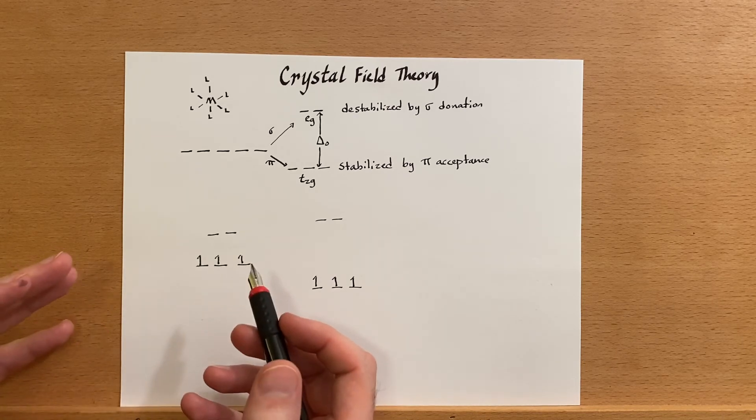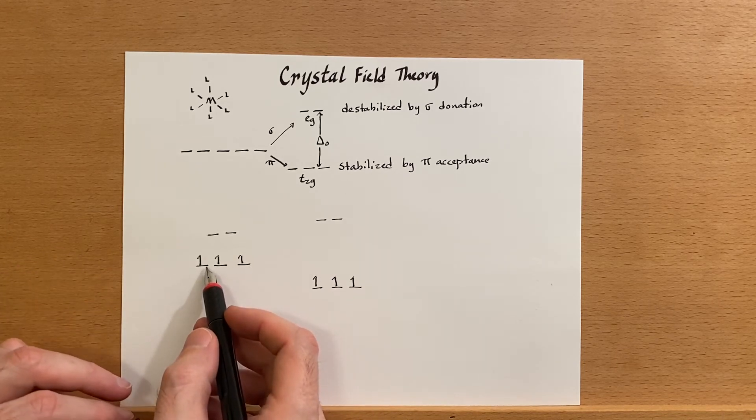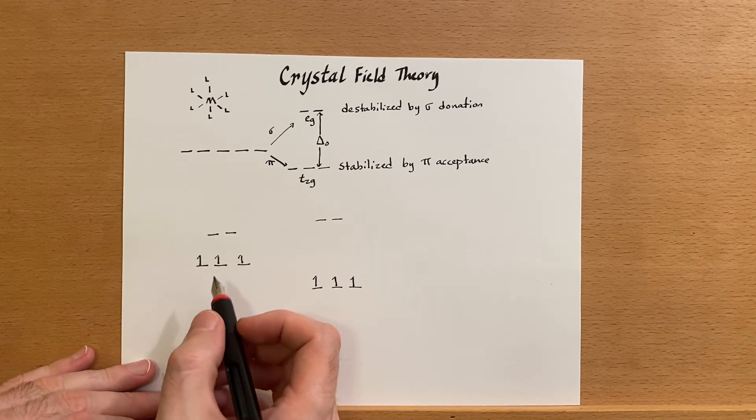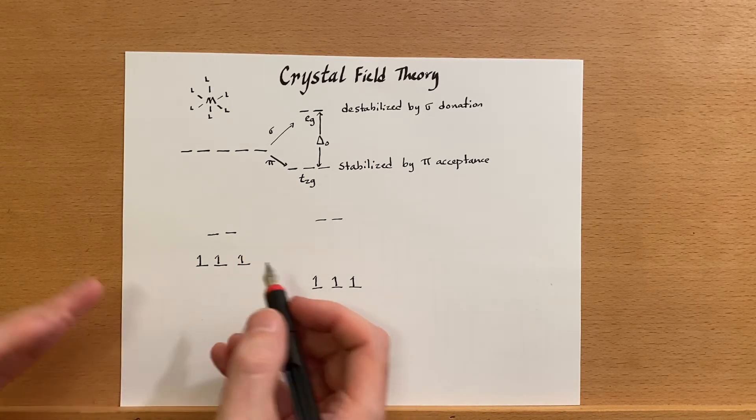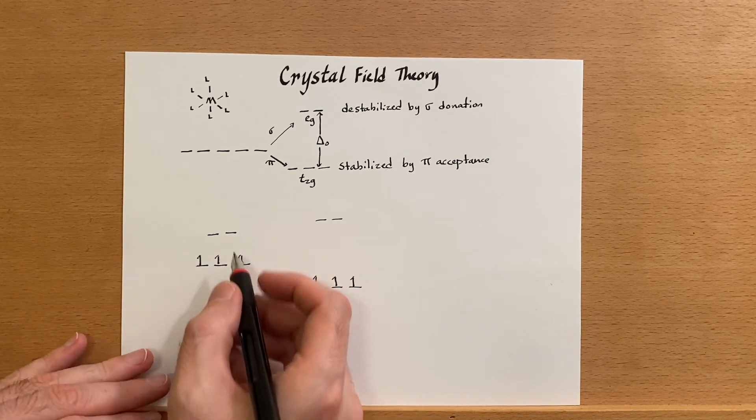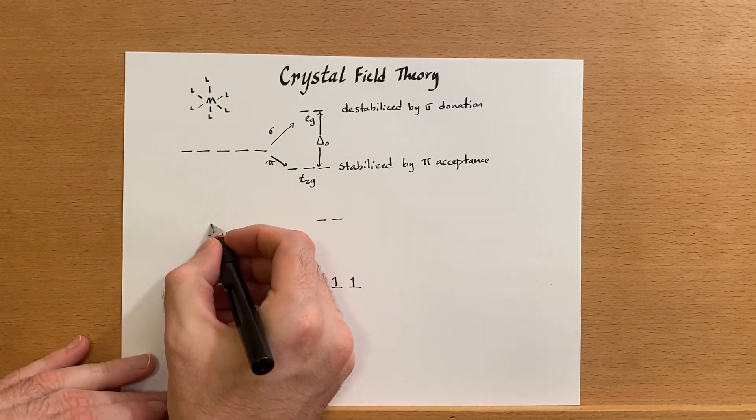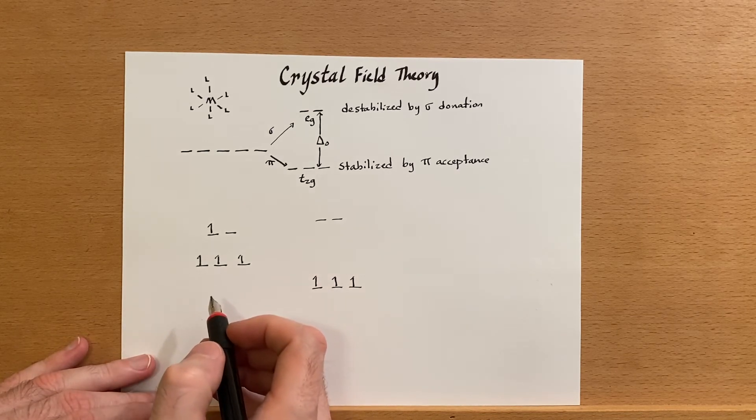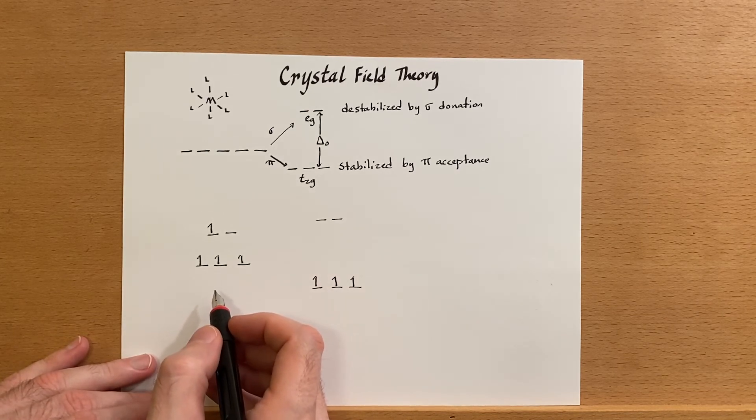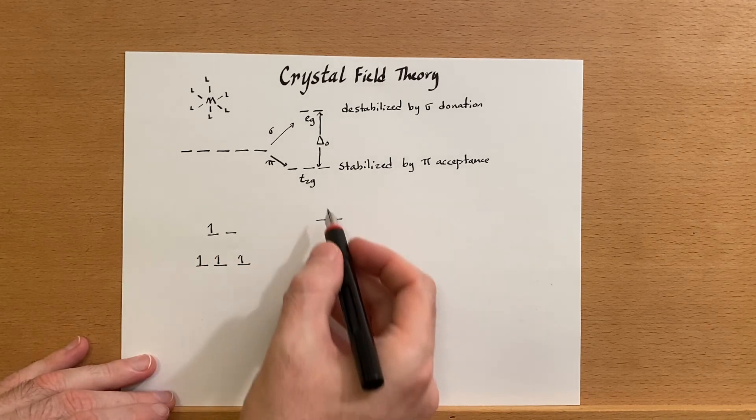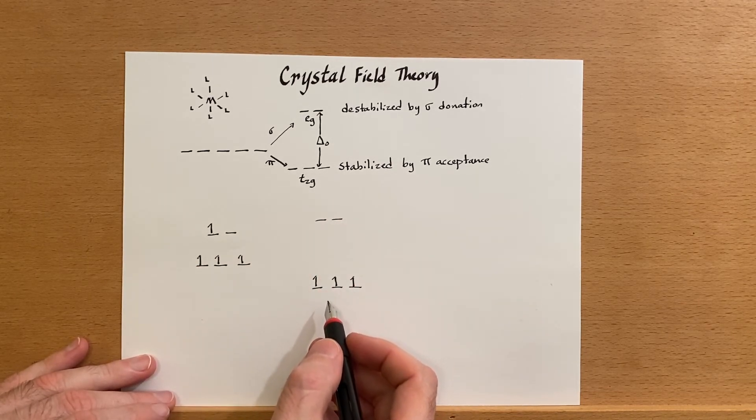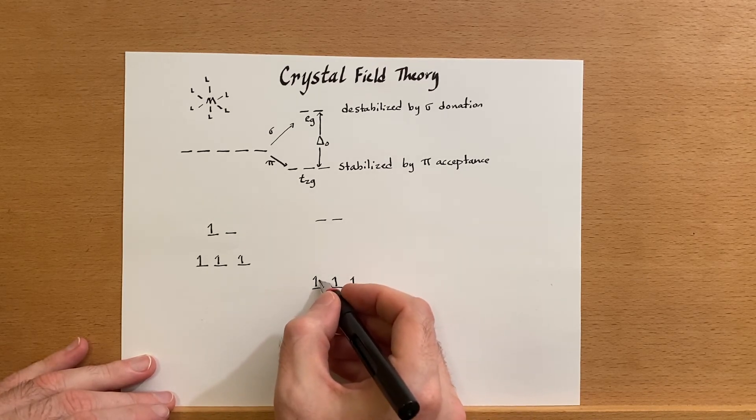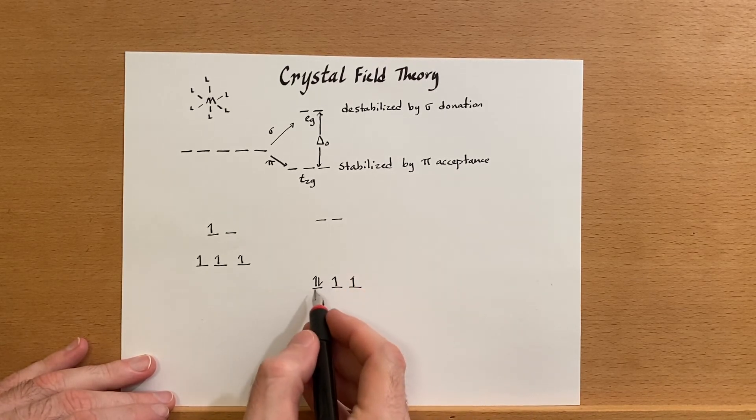So if the energy to pair up an electron is more than the energy that it takes to put the electron in the higher orbital, the electron will go in the higher orbital. In this case, let's say that the higher orbital is less energy than the energy that it would take to put another electron there. So that one goes there. Now in this case it's a much bigger energy gap, so the electron pairing energy was less, so the electron goes down here.